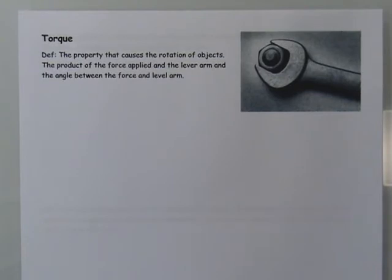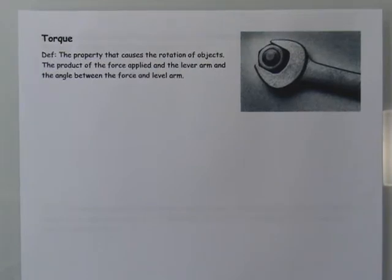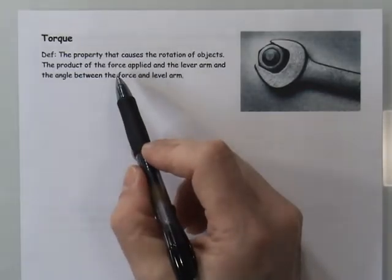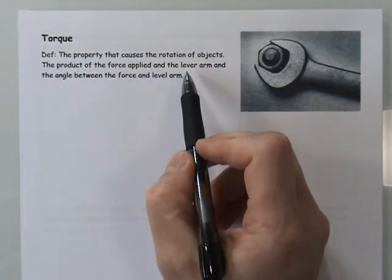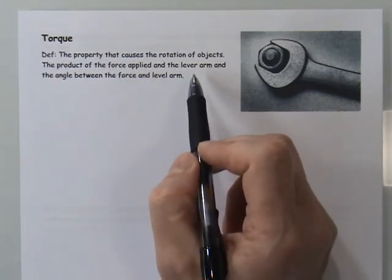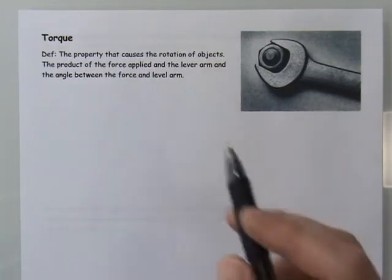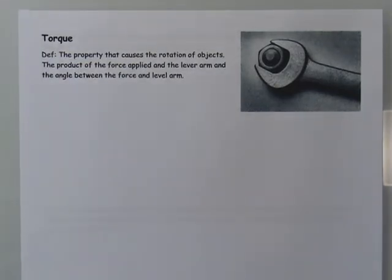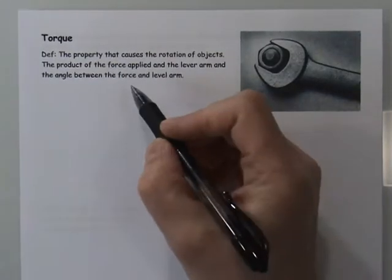Torque does turn out to be based on force, so the more force you apply to an object the more torque you can get and therefore the more rotation. But there are two other important things: number one is where the force is applied. We take the product of the force and the lever arm, which is the distance between the pivot point and where the force is applied. The farther you apply the force from the pivot point, the more torque you get.